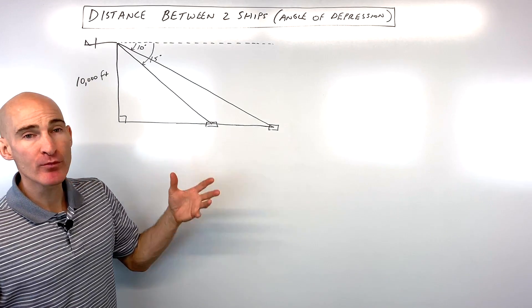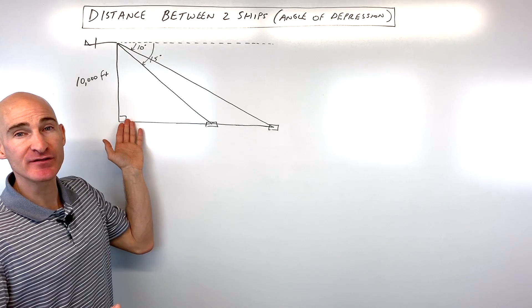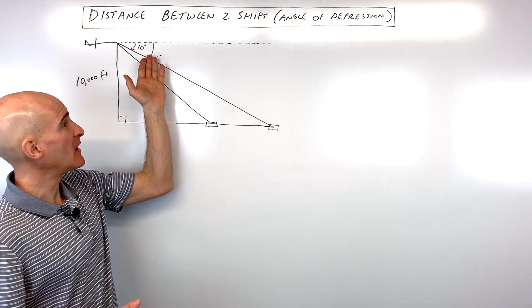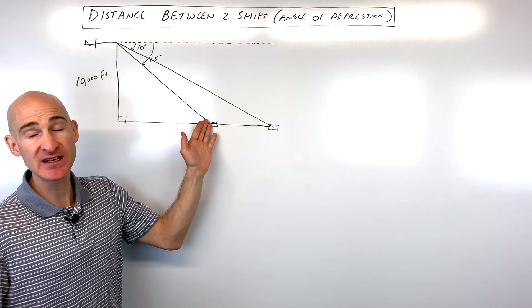In this particular example, they would give you a word problem, something like there's an airplane flying at an altitude of 10,000 feet. It spots one ship at an angle of depression of 10 degrees and another ship at an angle of depression of 15 degrees.